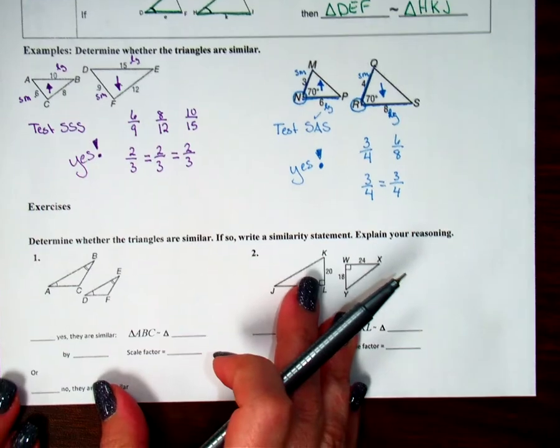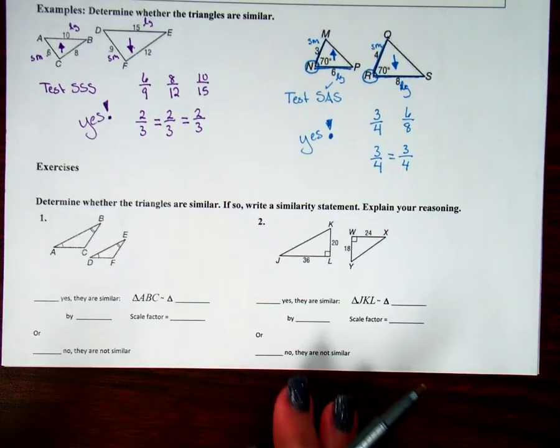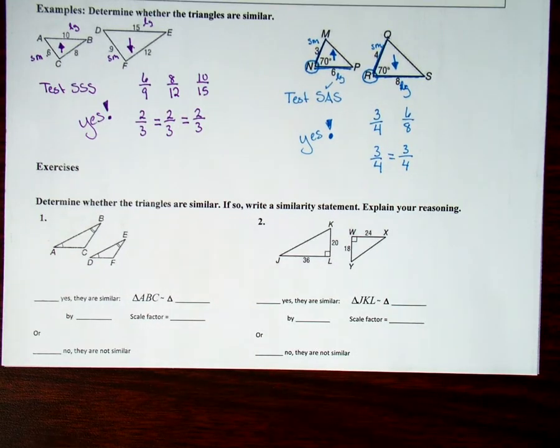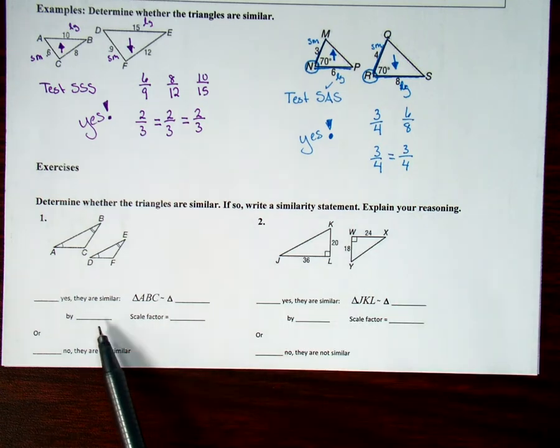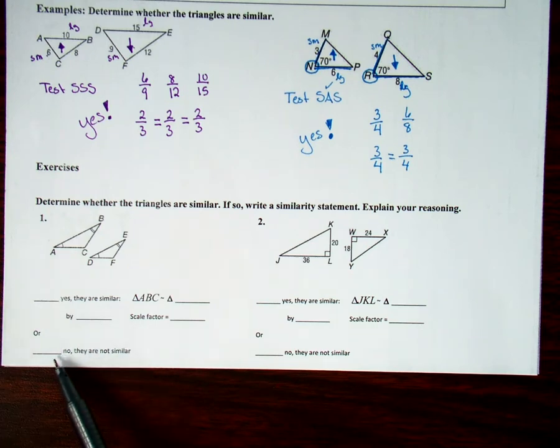Let's look at the next examples. Determine whether the triangles are similar. This time, if they are, we are going to write a similarity statement. And then, when it says explain our reasoning, we're going to fill in our reasoning as which theorem or postulate did we use. And if we say no, we don't have to worry about that. We don't have to fill anything else in.